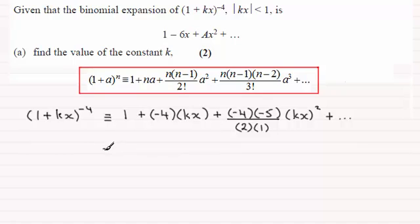So let's see what we get when we tidy this up. We've got the 1 and this term then is going to be -4kx. And as for this term we've got 20 divided by 2 which is 10, so we've got plus 10k²x², and plus and so on.